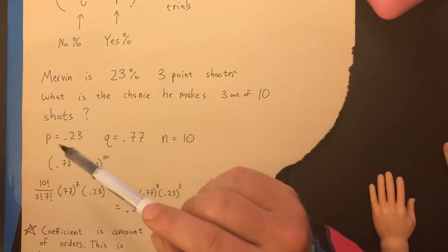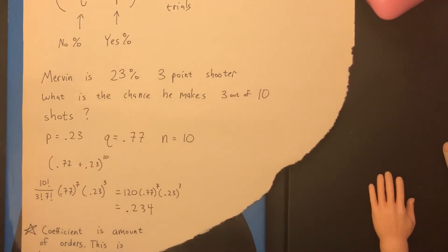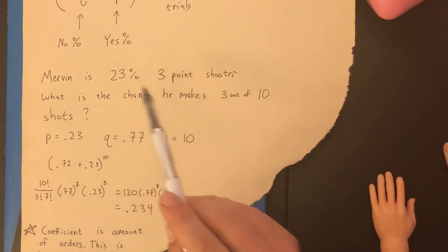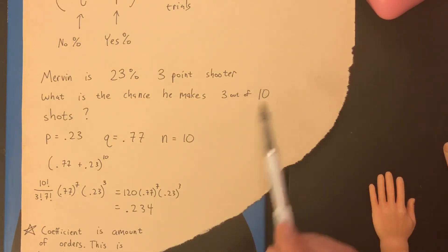We got Mervyn. He's balling out of the gym. He keeps the trap house jumping like Jordan, but he don't shoot like Jordan. He shoots 23% from beyond the arc, that's a three point shot. So let's say he takes 10 shots. What are the chances he makes three out of the 10?